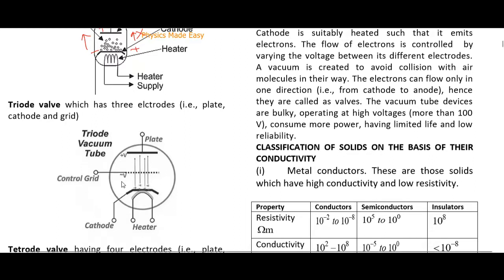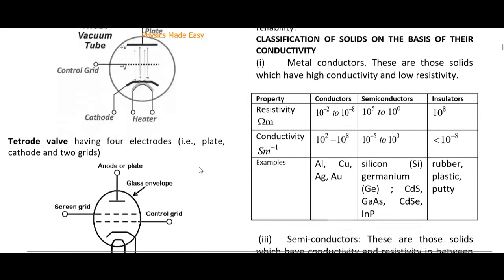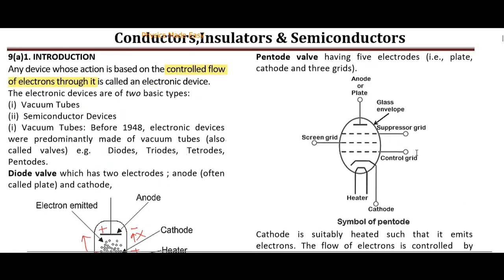After the triode comes the tetrode, in which a fourth element — a screening grid — was introduced. Then we have the pentode, which has a control grid, a screen grid, and a suppressor grid, giving five electrodes in total.